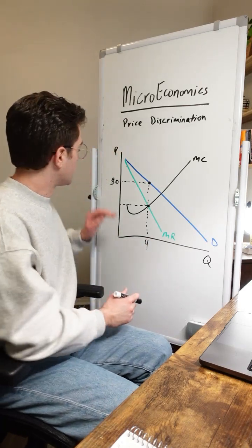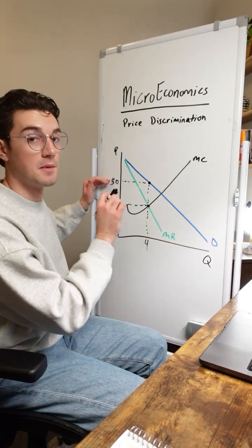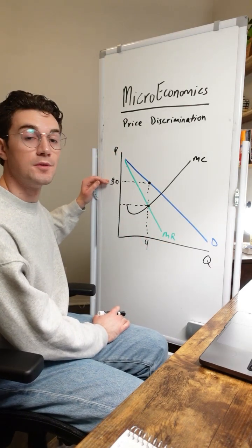So the big thing to understand here is that this monopoly, this non-price discriminating monopoly, is going to charge 10 bucks per unit to all consumers.